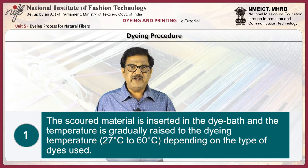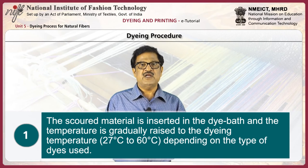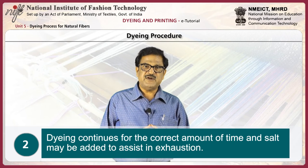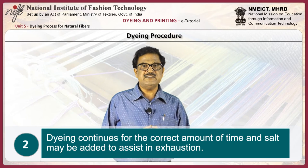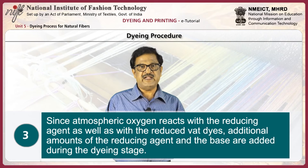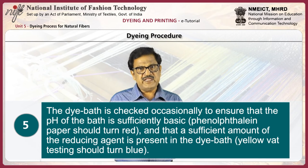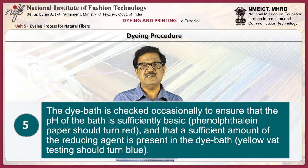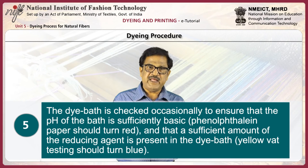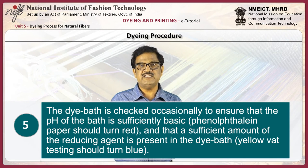Dyeing procedure: The substrate is inserted in the dye bath and the temperature is gradually raised to the dyeing temperature, about 27°C to 60°C depending on the type of dyes used. Dyeing continues for the proper amount of time and salt may be added to assist exhaustion. Additional amounts of reducing agent and base are added during dyeing since atmospheric oxygen reacts with them. The dye bath is checked occasionally to ensure the pH is sufficiently basic — phenolphthalein paper should turn red — and that sufficient reducing agent is present — the yellow vat testing paper should turn blue.